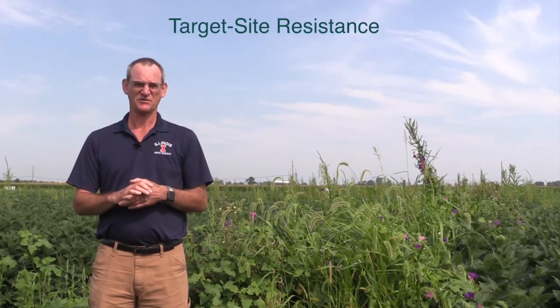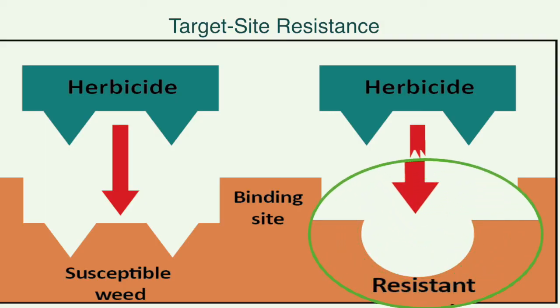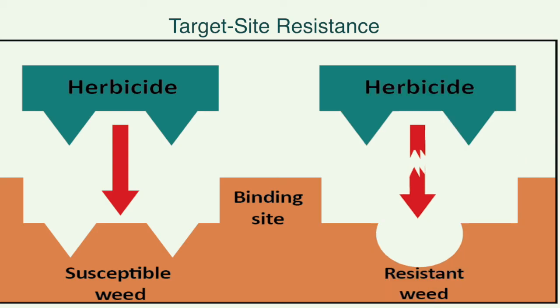When a weed has resistance in your field, there are two categories of mechanisms by which that weed can be resistant. One category is target site resistance, which refers to a mutation in the gene that encodes the target site of the herbicide. That mutation prevents the herbicide from binding to that enzyme, binding to its target site, and therefore the herbicide can't do its job. That's target site resistance.